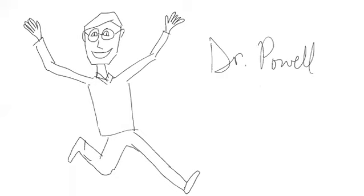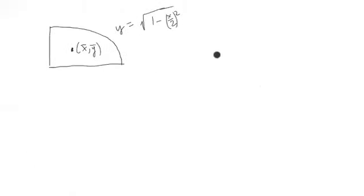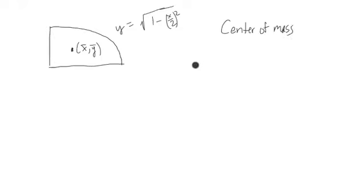Welcome to a lesson with Dr. Powell. Let's talk about the idea of centroid or center of mass. Center of mass can be thought roughly or intuitively as: if you have a flat object, where do you need to put your fingers so it'll perfectly balance the object, so we'll have mass equally distributed around it, kind of thinking about the shape of the object. So, center of mass.